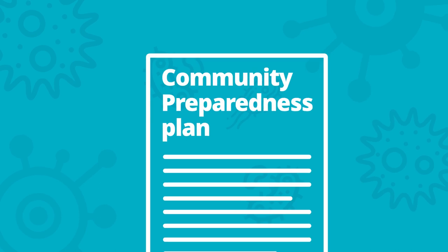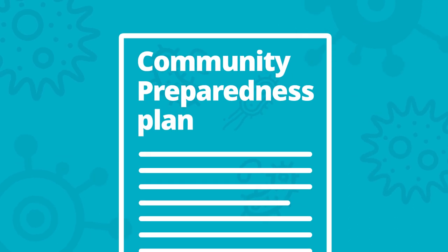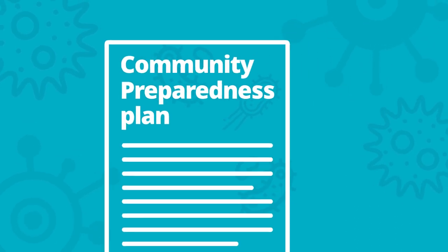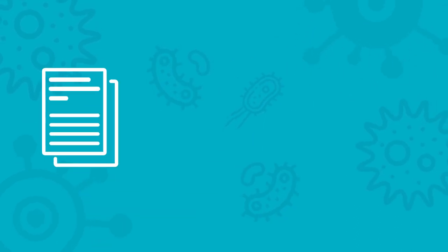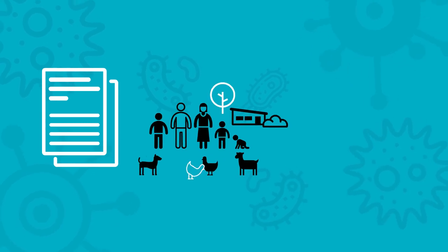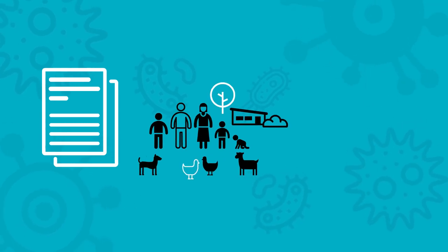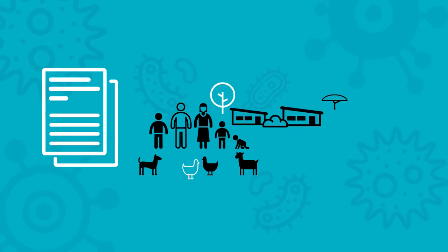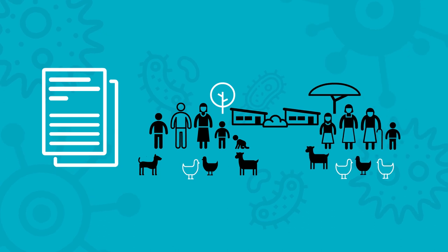Linked to the country's overall preparedness plan, a community-level preparedness plan informs people how to respond to protect themselves, their family, and their neighbors.